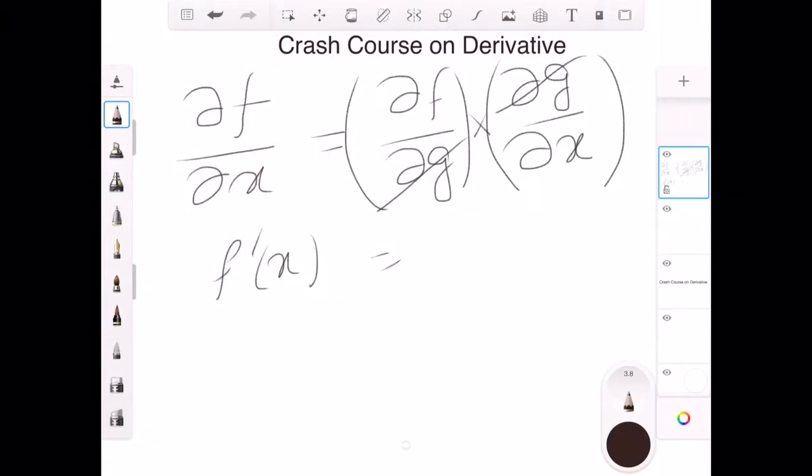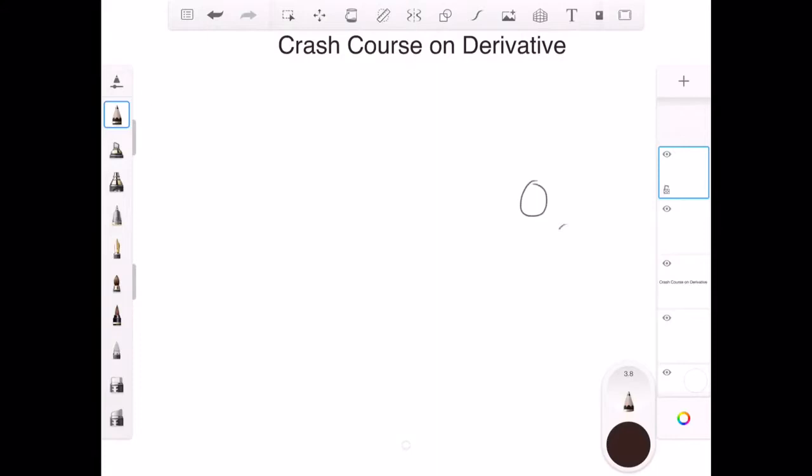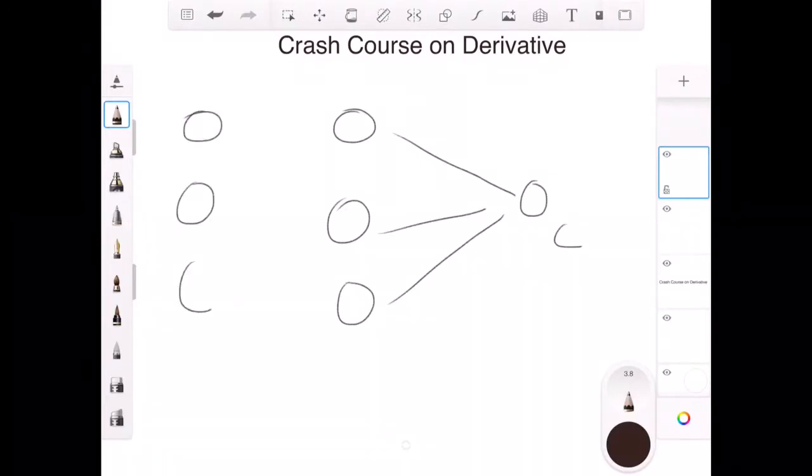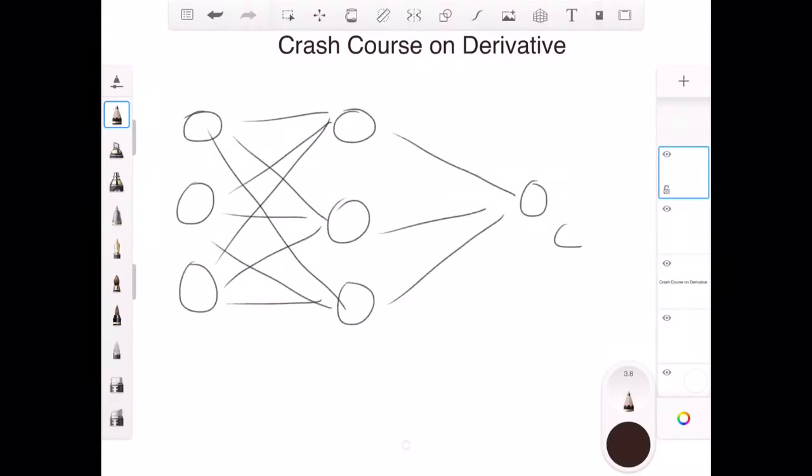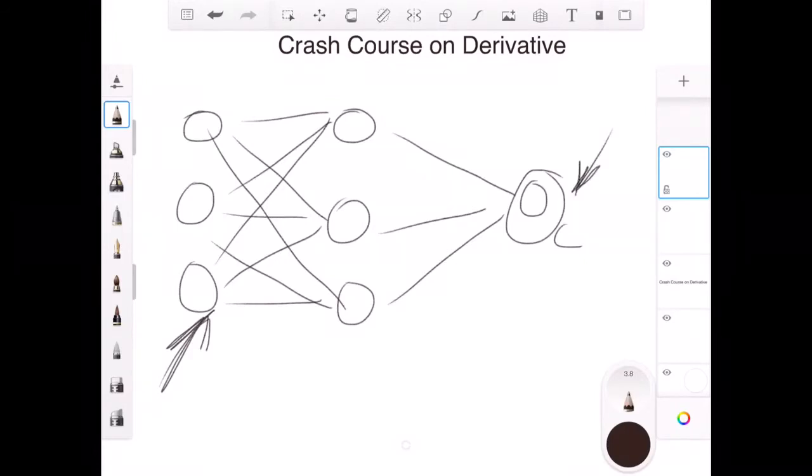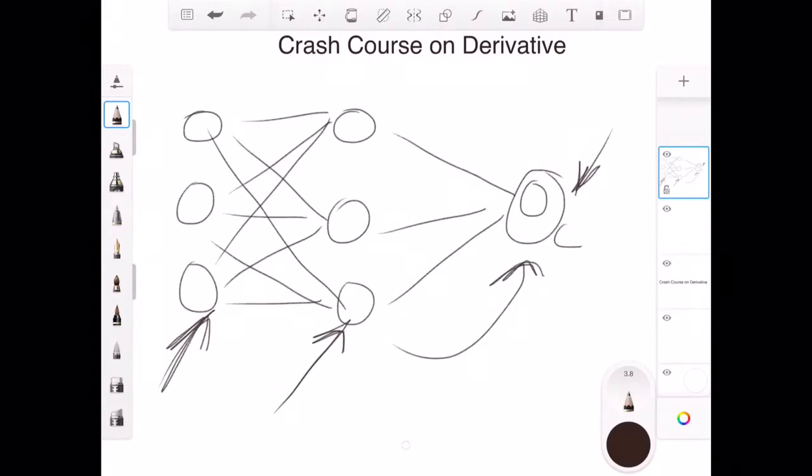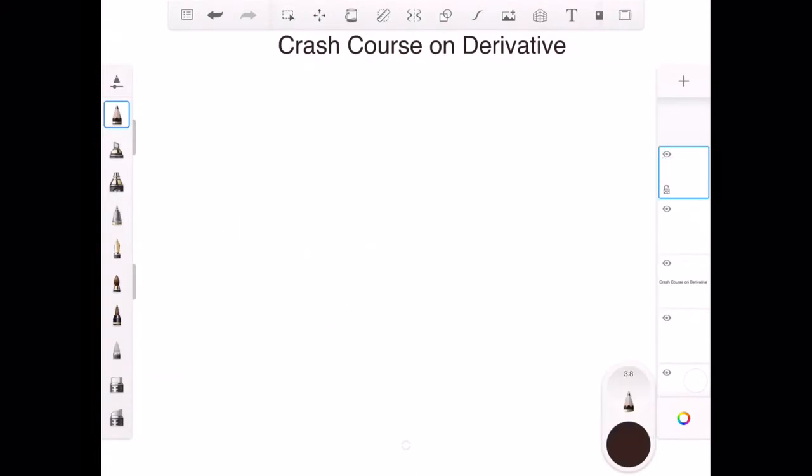In chain rule, we don't directly impact the output, rather we have in between some more things that's happening. This is a very common concept and is heavily used in neural networks and advanced machine learning algorithms. In neural networks, you'll have some output C, then some weight layers in between, and input layers. Whatever you change in the input, they all are going to affect the output overall. You're not directly changing the output, you're changing something in between, and they in turn will change the output. This is how the chain rule works.